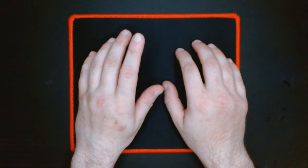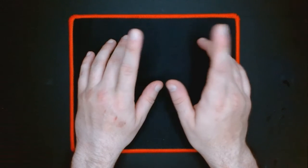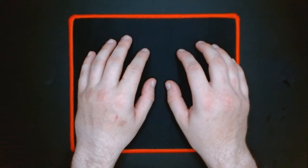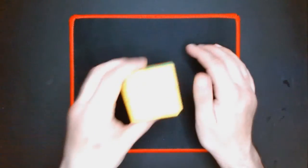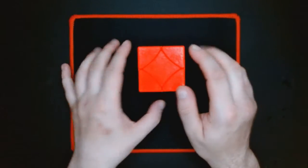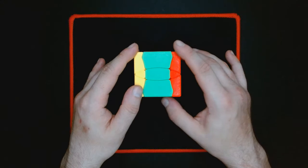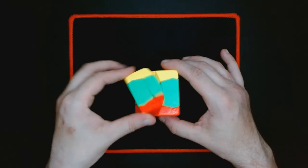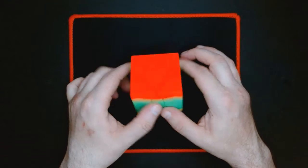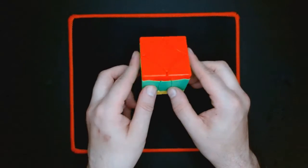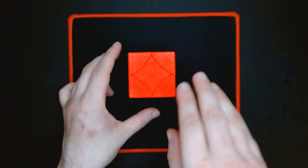Hey guys, Kurt here, welcome back to another twisty puzzle solve. In this video we'll be solving the Shang Shao Phoenix cube. It's a 3x3 shape mod and it's only got three colors: yellow, green, and red.